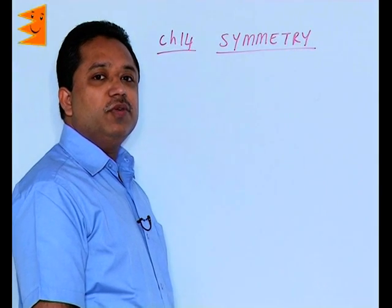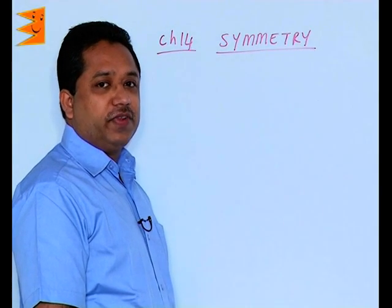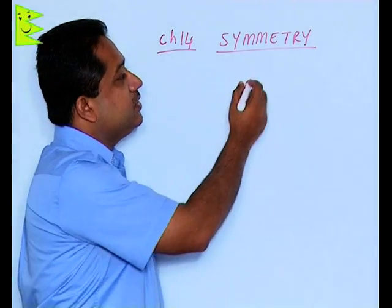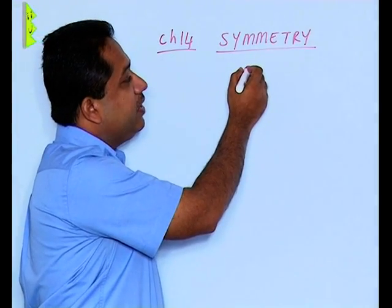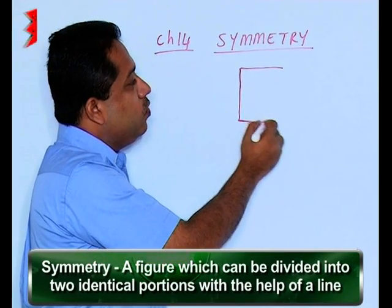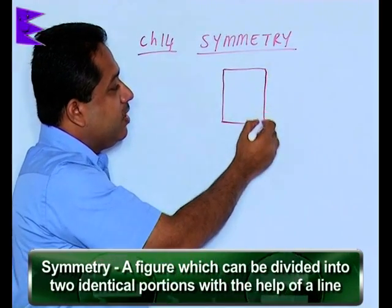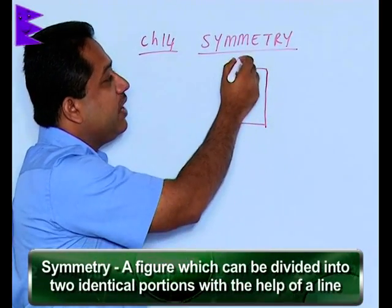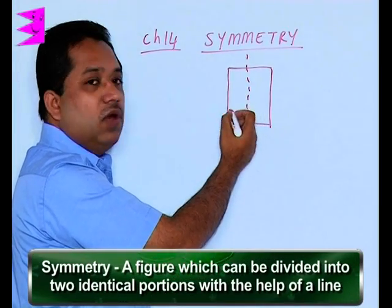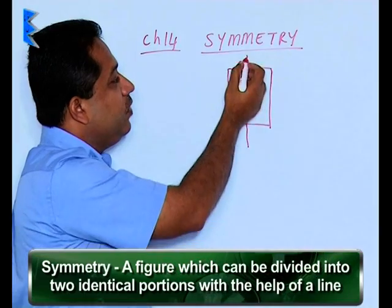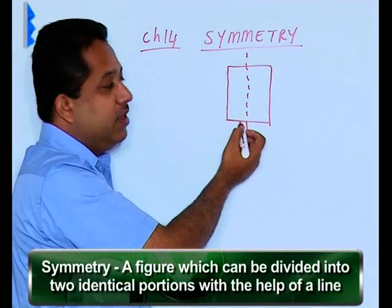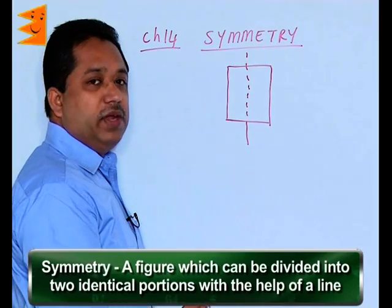In chapter 14, we are going to deal with symmetry. Symmetry is basically a figure which can be divided into two identical portions with the help of a line. If you are able to divide a figure into two identical portions with the help of a line, then this is called the axis of symmetry and this figure is said to be symmetrical.